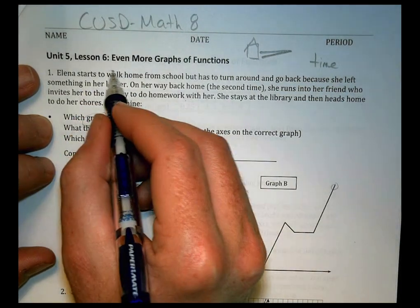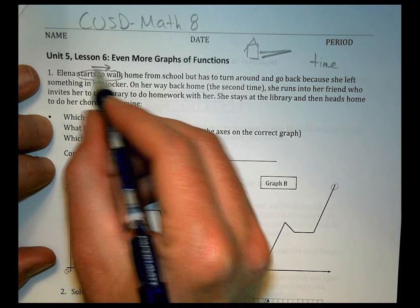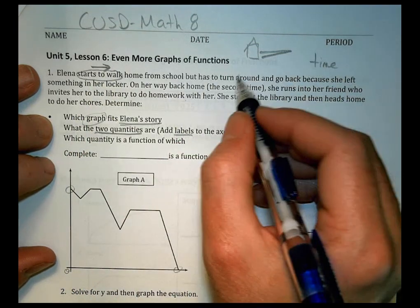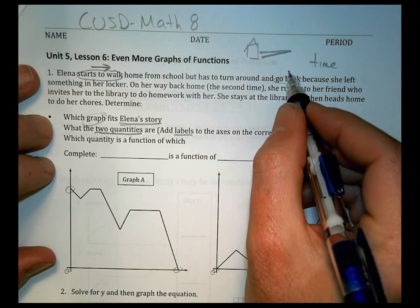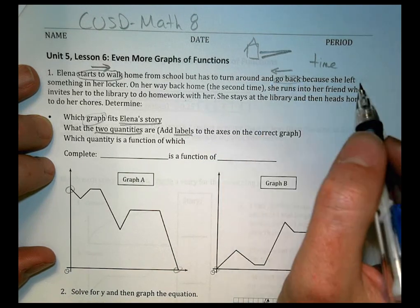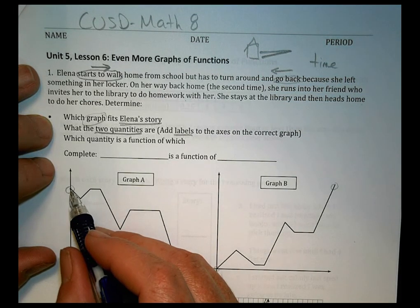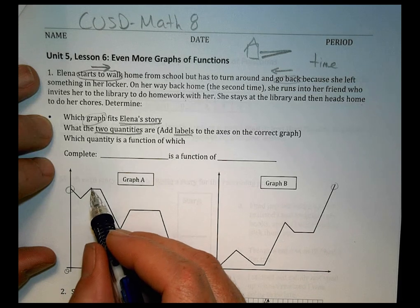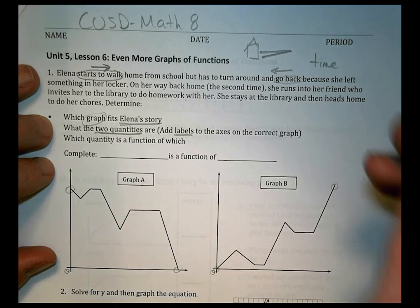So we know that time is a function here, or time is some part of our equation, because there's time happening. At some point, the time runs out, and she finally makes it home. But what changes, though, is going to be maybe that distance that she's traveling. So we notice she starts to walk home. So she starts moving in kind of that direction. She's going home. But then she has to turn around and go back. Now because she's going to go back, we know that she's going to go the other direction. And we can see that in both of these charts here.